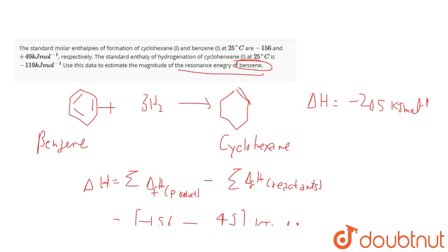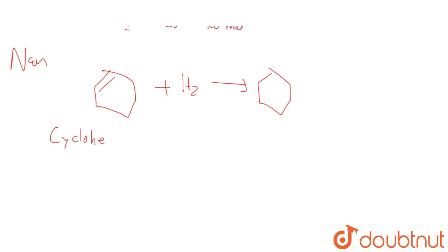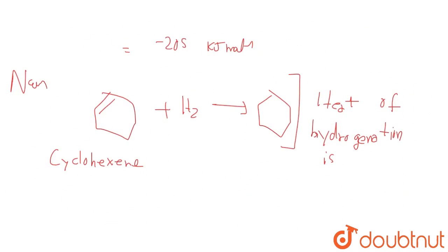Now we have been given the standard enthalpy for the hydrogenation of cyclohexene. Cyclohexene on reaction with H2 yields cyclohexane. For this reaction, the heat of hydrogenation is given to be minus 119 kilojoules per mole. So we can clearly see